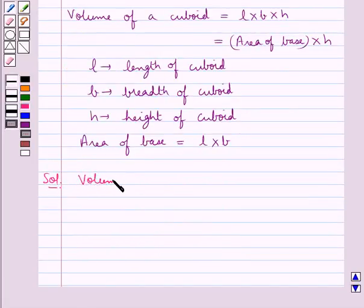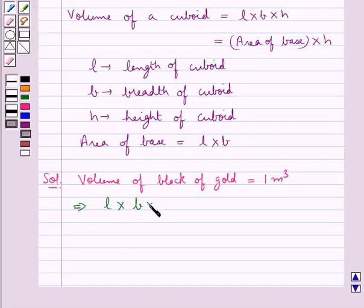We are given the volume of the block of gold is equal to 1 meter cube and the block of gold is cuboidal in shape. So this means that the length into breadth into height of the block of gold is equal to 1 meter cube.